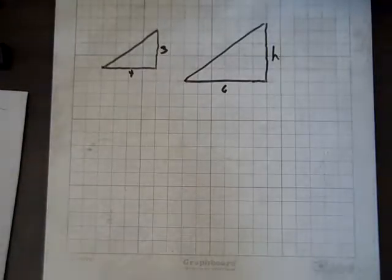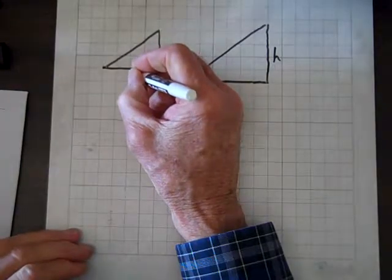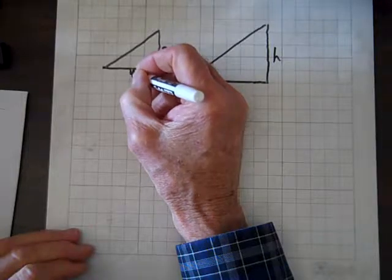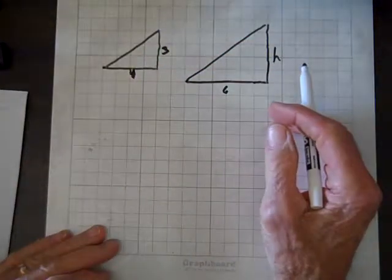Well, now we're dealing with ratio and proportion. A ratio is just a quotient of A over B. A proportion is when you equate two ratios.